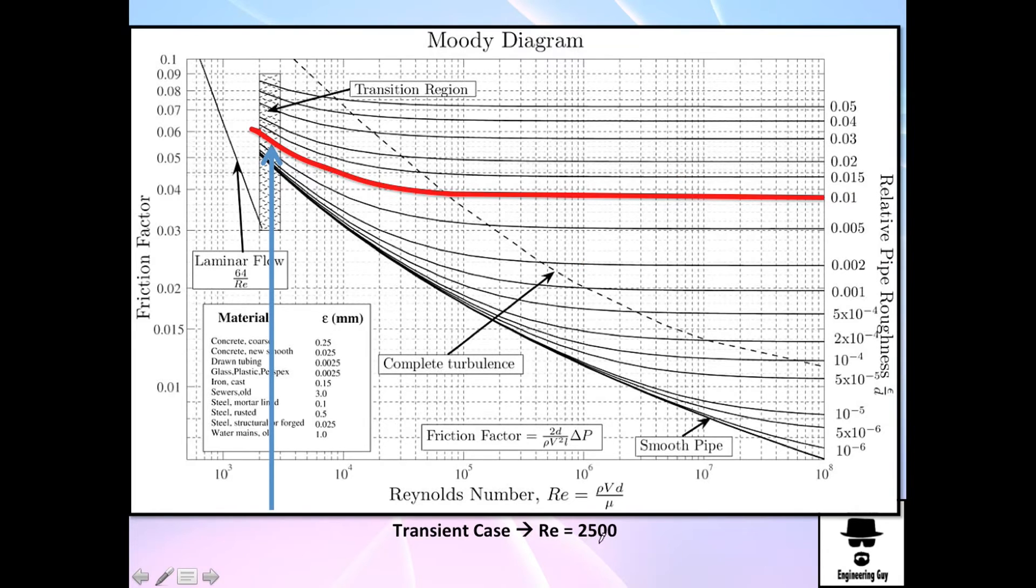For the transient case, Reynolds equals 2,500. So I'll find it. This is the Reynolds number and this is the transient region. You could say it's about 0.055 or 0.054. But this is tricky. I'm pretty sure it's not true and it's not reliable. So I will tell the experimenter to increase the velocity in order to increase the Reynolds number.